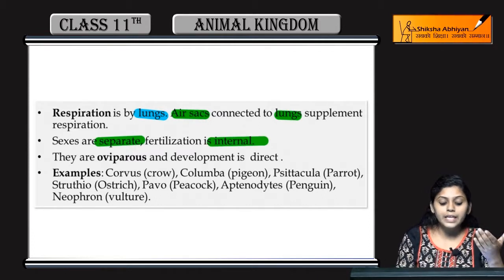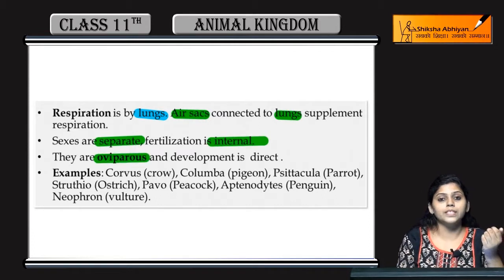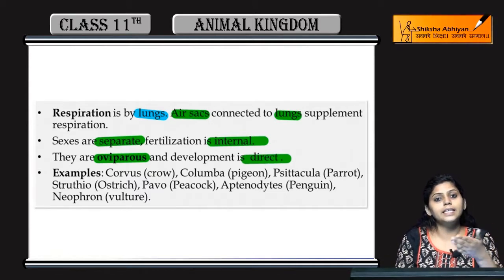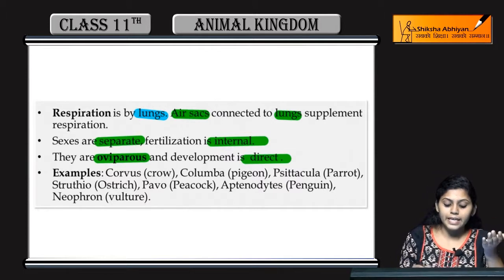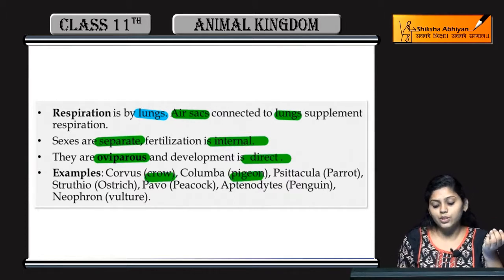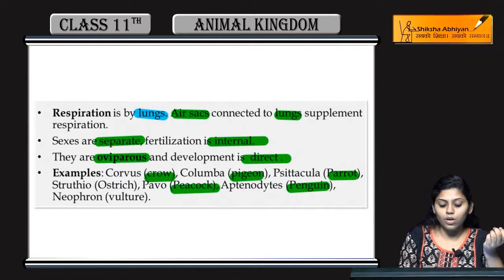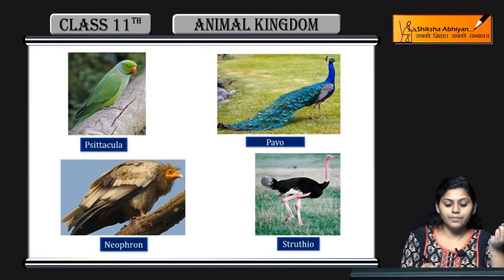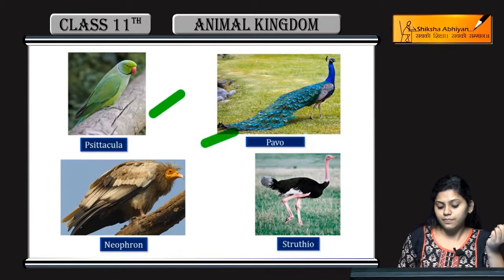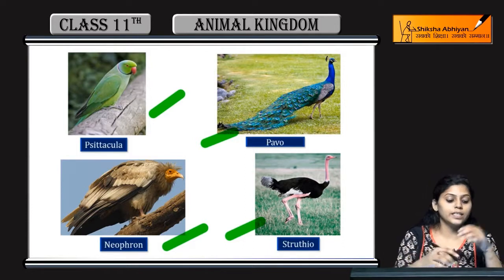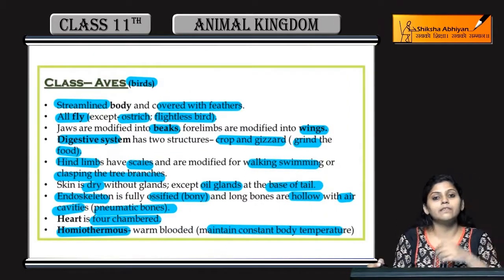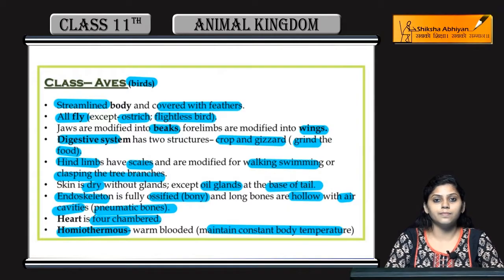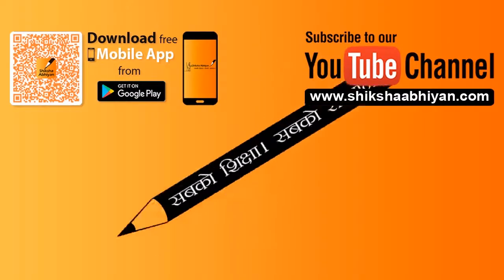Sexes separate hote hai, means they are dioecious. Fertilization is internal. They are mostly oviparous — eggs lay karti hai and development is direct, directly adult form karti hai. Examples hai crow, pigeon, parrot, penguin, peacock, ostrich, and vulture. You can see parrots — Pavo, Struthio, and Neophron. Ye the sare examples of Aves aur uske features.